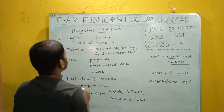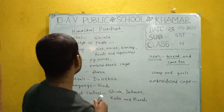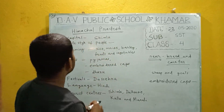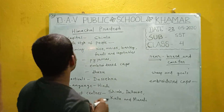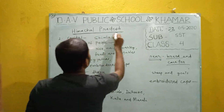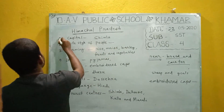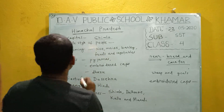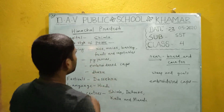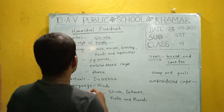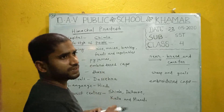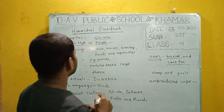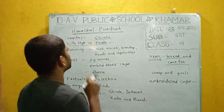Himachal Pradesh lies to the south of the Great Himalayas. It lies in the northeastern part of India and is also a beautiful Indian state. Its capital is Shimla. When we talk about the lifestyle of the people of Himachal Pradesh, it is almost the same as those of Jammu and Kashmir.